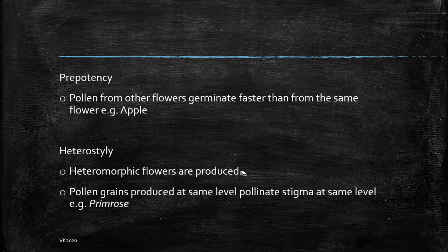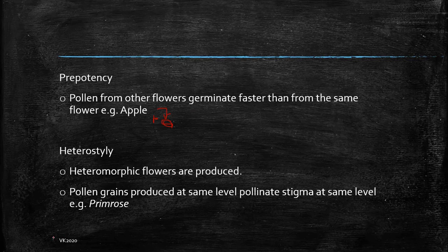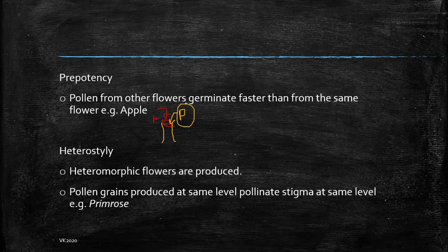Then we have pre-potency, wherein pollen from other flowers germinates faster than from the same flower. When your own pollen and pollen from another plant both land on your stigma, the style and ovary are developed in such a way that the other plant's pollen has more chances of germinating. This happens in apple.